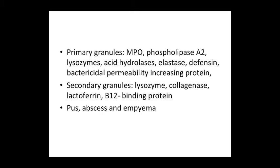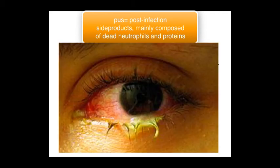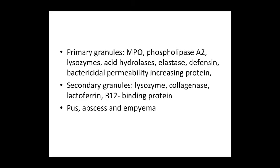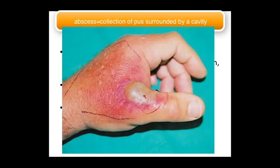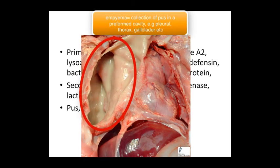After the neutrophil clears the infection, it dies, and the excess myeloperoxidase released forms a substance that is initially green and protein-rich — called pus — which later changes to a white-yellow color. This is commonly seen in the inner corners of your eyes in the morning. A collection of pus that forms a cavity around it is called an abscess, but if pus collects in a pre-existing cavity, the term changes to empyema.